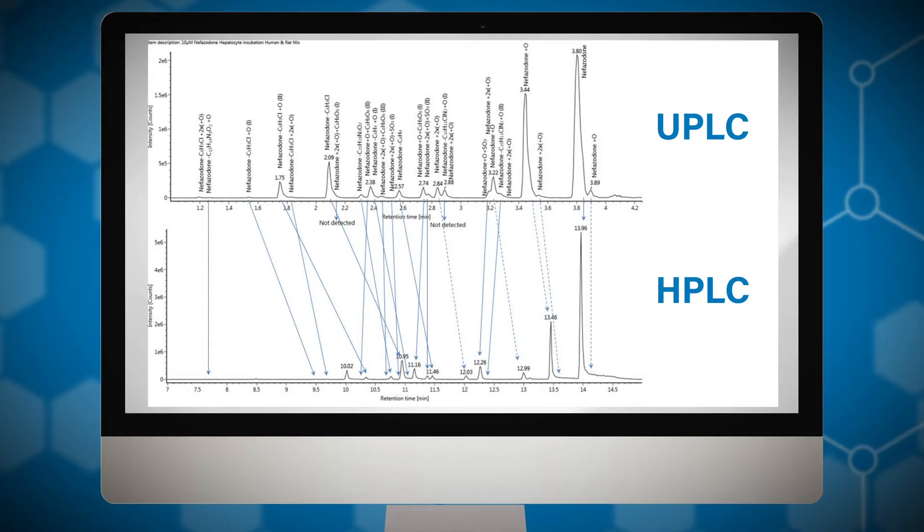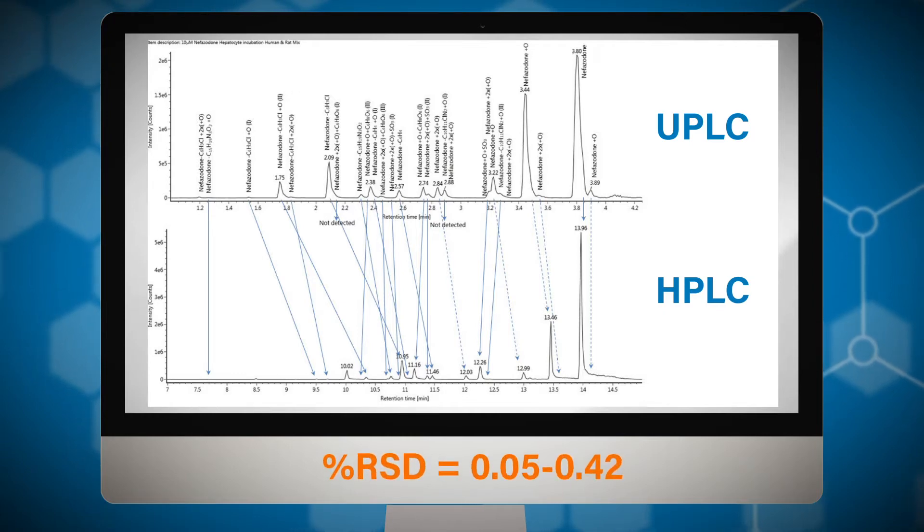This reduces the need to reanalyze samples using revised methods developed later in the drug development program, allowing comparisons to be made across studies using both HPLC and UPLC methods. Here, we see extracted ion chromatograms for these two methods, UPLC on the top and HPLC on the bottom. Nineteen metabolites were successfully correlated between the two methods. However, thirteen of them, many of which were isomeric, could not have been matched by accurate mass alone and needed CCS measurements. The RSD between replicate injections was between 0.05% and 0.42%. Ultimately, CCS values allow for the most appropriate method to be used without losing the ability to compare results.